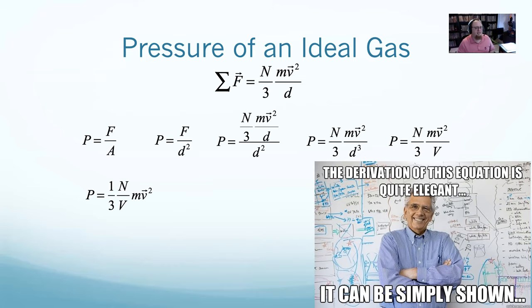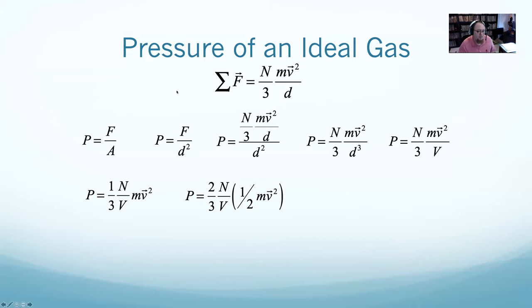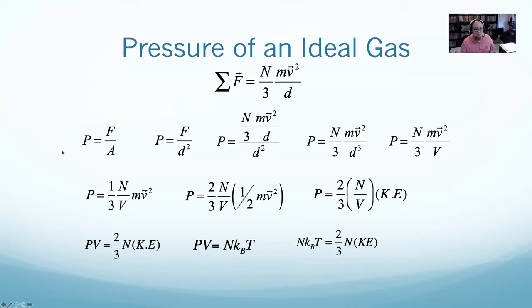Leaving me with pressure is one-third N over V, MV squared. But let's think about MV squared. We've seen one-half MV squared. If I multiply this by two over two, I can say it's two-thirds N over V times one-half MV squared. That one-half MV squared, that's what we called kinetic energy.